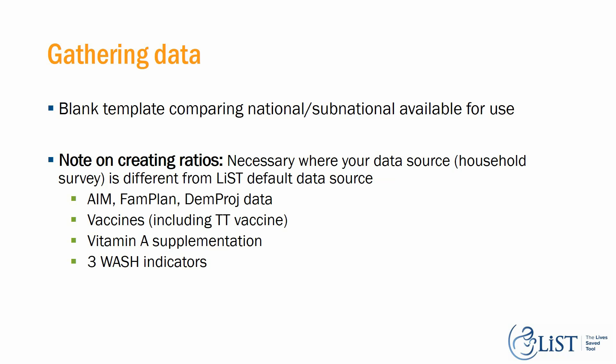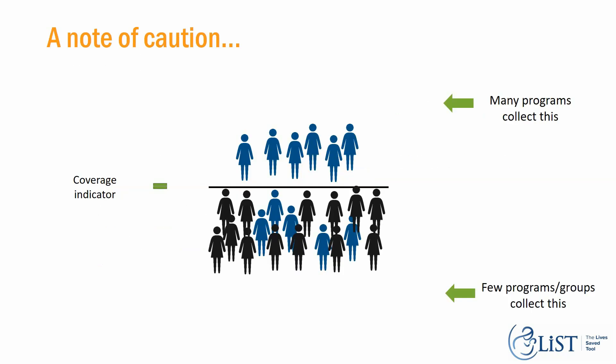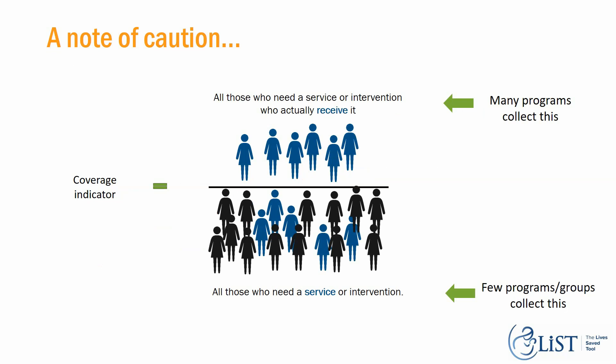For some interventions, it might be necessary to create a ratio when the household survey differs from the LIST default data source — that includes anything from AIM, FAMPLAN, and DEM-proj modules, vaccines including TT, vitamin A supplementation, and the WASH interventions. Also, most programs collect the numerator but not the denominator. Coverage is all those who need an intervention and receive it, divided by all those who need the service, and many programs don't collect both, making it difficult to extract coverage.